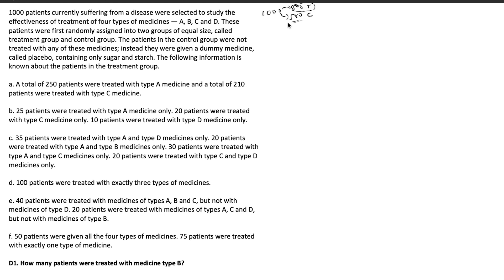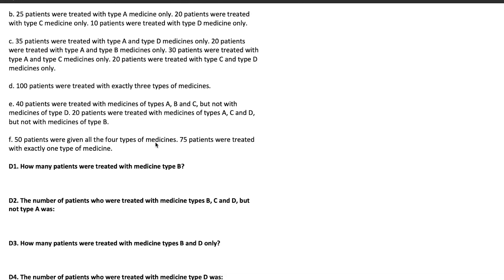Let's come back to the question. The following information is known about the patients in the treatment group — we have points A to F, all about the 500 people in the treatment group. The first point: a total of 250 patients were treated with type A medicine, and a total of 210 patients were treated with type C medicine.